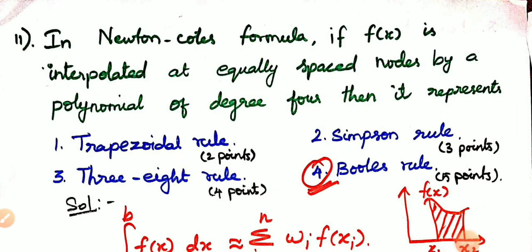Let's move on to the 11th question. In Newton-Cotes formula, if f(x) is interpolated at equally spaced nodes by a polynomial of degree 4, then it represents: trapezoidal rule, Simpson's rule, triade rule, or Boole's rule. The answer is Boole's rule. The concept is Newton-Cotes formula, which has closed and open formulas.